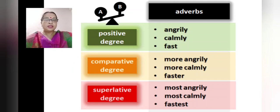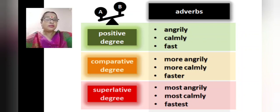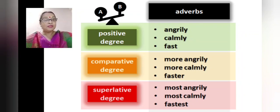Just like adjectives, we have adverbs. Angrily, calmly, fast — all these are adverbs in the positive degree. So what will be the comparative degree? More angrily, more calmly, faster. And the superlative degree: most angrily, most calmly, fastest.